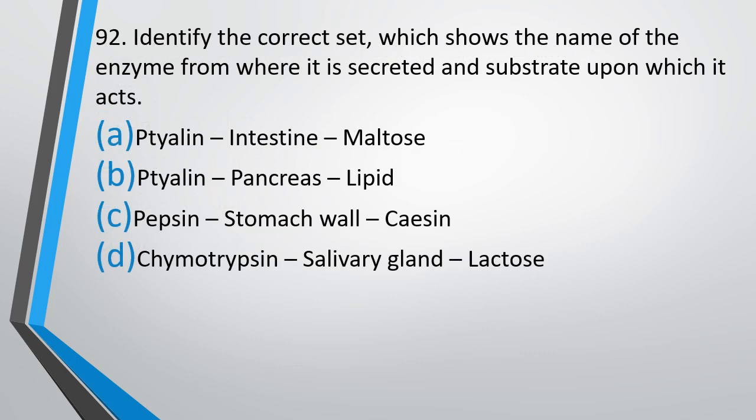Question number 92. Identify the correct set which shows the name of the enzyme, where it is secreted, and the substrate upon which it acts. The correct answer is option C — pepsin, stomach wall, and casein.